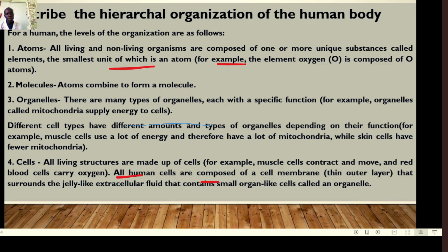Our next objective is the hierarchical organization of the human body. The levels of organization are: atoms make molecules, molecules make organelles, organelles make cells. All living and non-living organisms are composed of one or more unique substances called elements, and the smallest unit is an atom. For example, the element oxygen is composed of two atoms (O2). When atoms combine, they form molecules — like a water molecule H2O, with two hydrogen atoms and one oxygen atom.